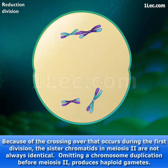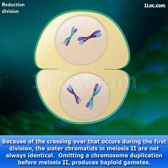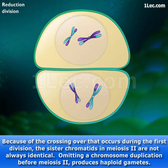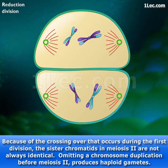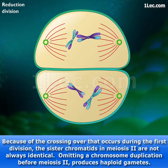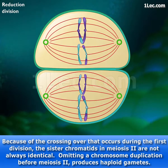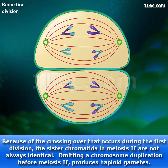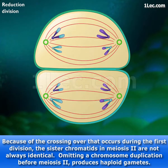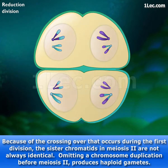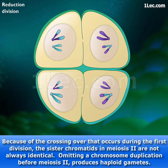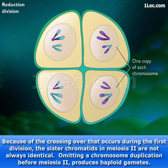Because of the crossing over that occurs during the first division, the sister chromatids in meiosis II are not always identical. Omitting a chromosome duplication before meiosis II produces haploid gametes.